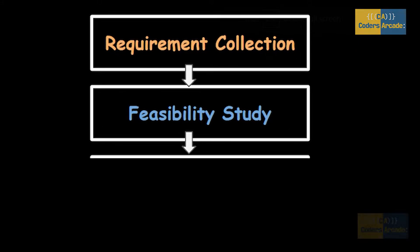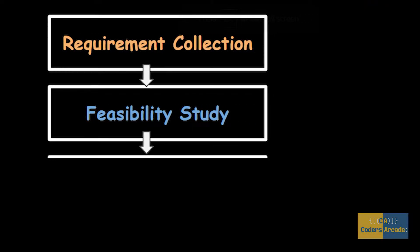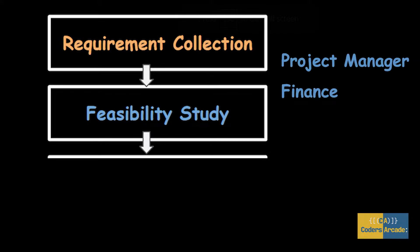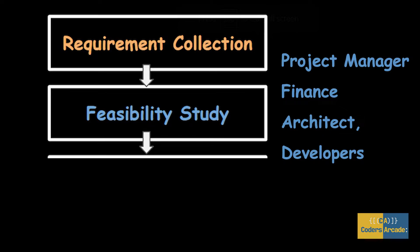In the Feasibility Study, the company brings together everyone — a Project Manager, a Finance team, HR, an Architect, Developers, and Testers. All these people will be there. The Project Manager is the head of the project and he finally decides whether the company is going to take up the project or not. This team starts giving their rationale about the project.